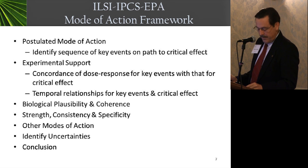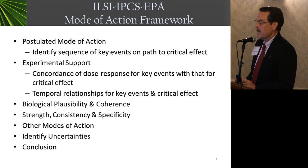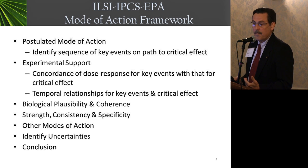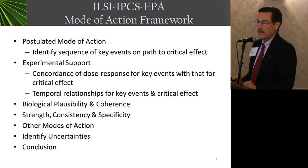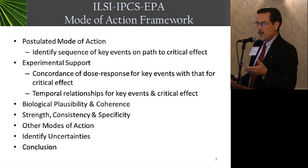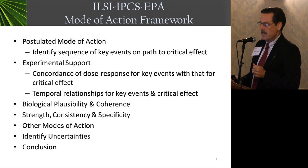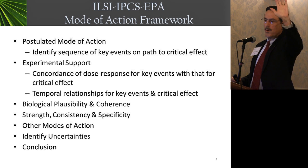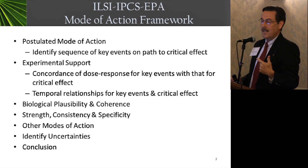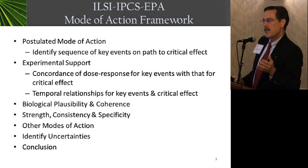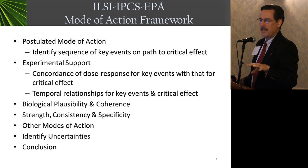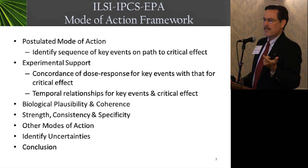Many years ago, the International Program of Chemical Safety, US EPA, and others developed a mode of action framework over a series of years. You start with postulating the mode of action, determine experimental support, and then go through criteria — biological plausibility, strength and consistency, and identifying uncertainties. These look like the Hill criteria that epidemiologists have used for a long time, now adapted for risk assessment. They ask: just because you get an effect in animals, does that mean it relates to people?